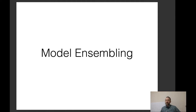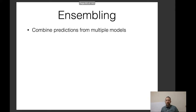One other important topic: model ensembling. This is not directly only applicable to sequence-to-sequence models, but it's a very important trick that often gets you large gains in accuracy. Ensembling essentially means combining predictions from multiple models — model one and model two each independently make predictions, and these predictions are combined to make the final prediction of the ensemble.